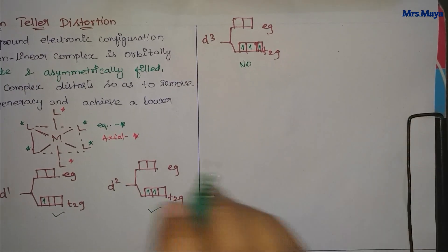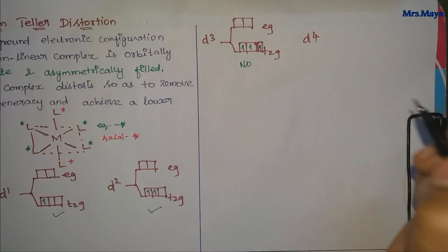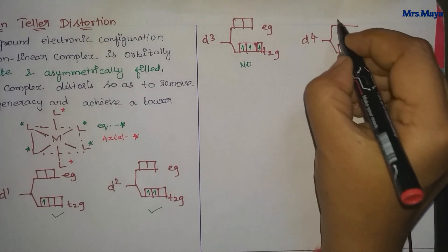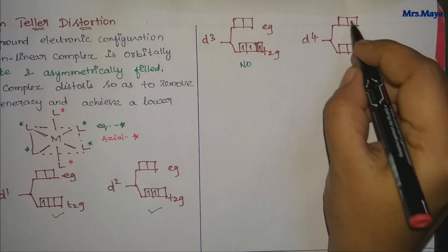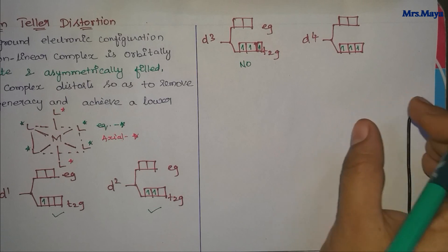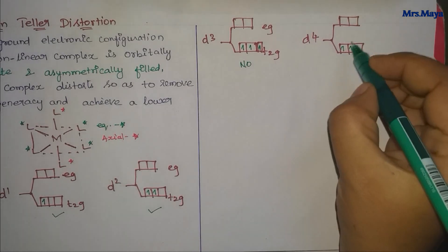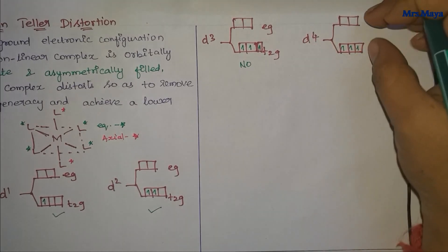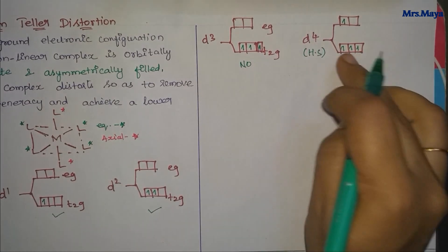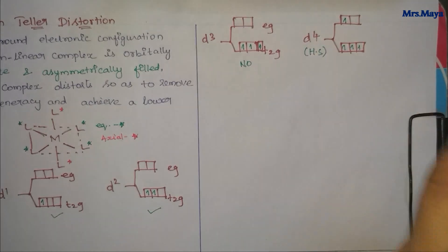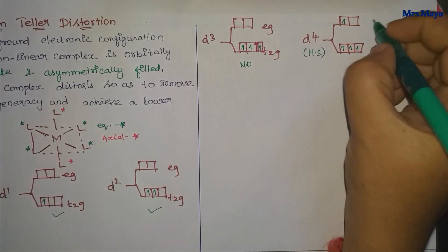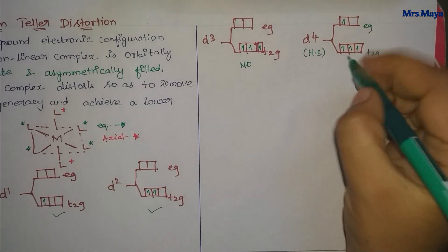This is D4 — a special case. There is high-spin or low-spin. Here is the T2G set and here is the EG set. There are four electrons — how to fill them. For this, we need strong or weak ligands. Strong ligand means the splitting is large, meaning pairing energy is overcome and pairing starts first. Weak ligand gives high-spin filling. Weak field is high spin.